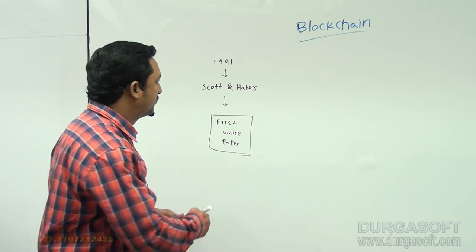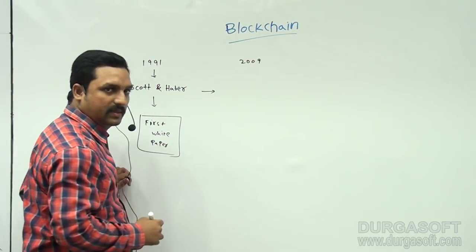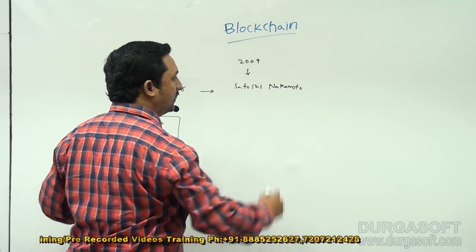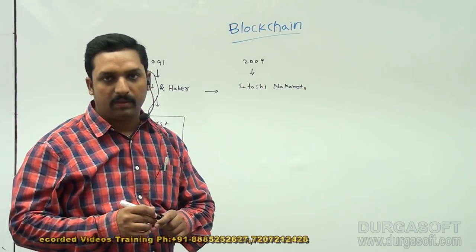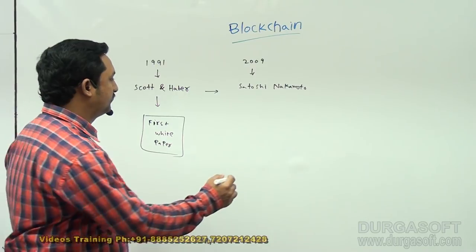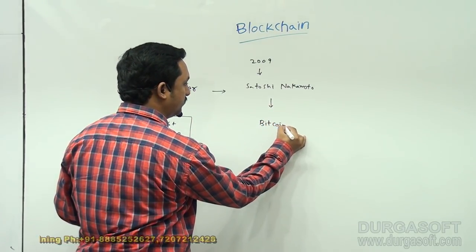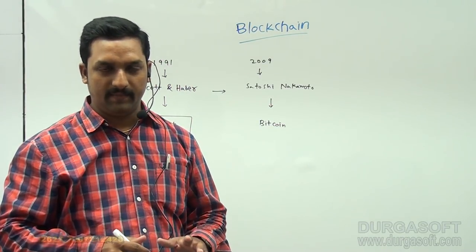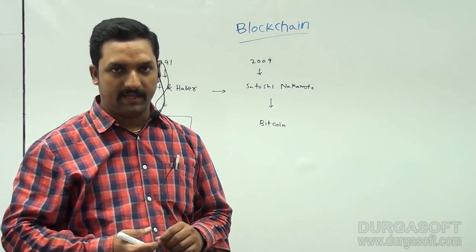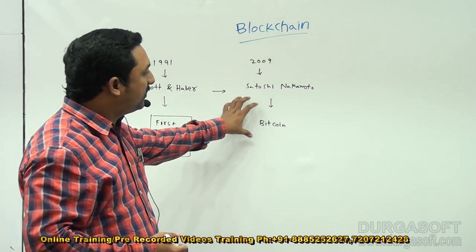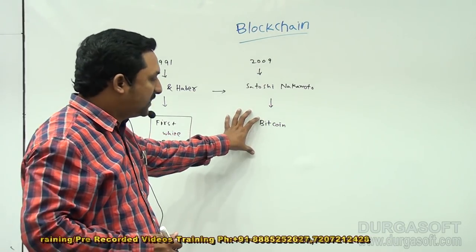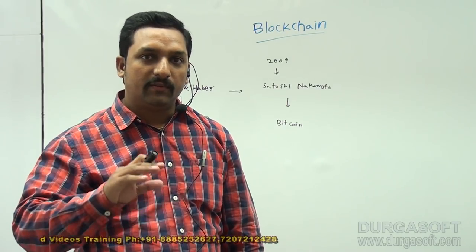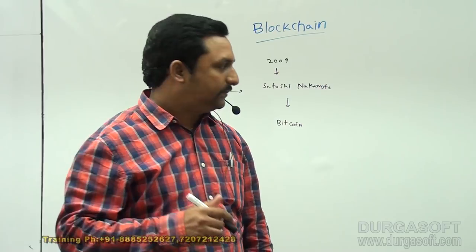Later in 2009, Satoshi Nakamoto implemented blockchain technology. The first implementation of blockchain is Bitcoin. What is the difference between blockchain and Bitcoin — are they the same? No, they are different but related. You can say that Bitcoin is implemented based on blockchain technology. Blockchain is the technology behind Bitcoin, meaning you can create your own Bitcoin based on blockchain.